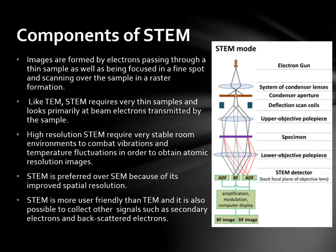Images are formed by electrons passing through a thin sample as well as being focused in a fine spot and scanning over the sample in a raster formation. Like TEM, STEM requires very thin samples and looks primarily at beam electrons transmitted by the sample. High-resolution STEM requires very stable room environments to combat vibrations and temperature fluctuations in order to obtain atomic resolution imaging. STEM is preferred over TEM because of its improved spatial resolution, and it is more user-friendly. It is also possible to collect other signals such as secondary and backscattered electrons.